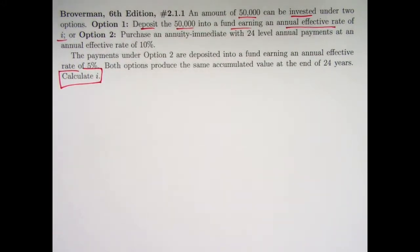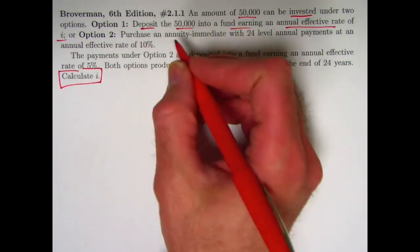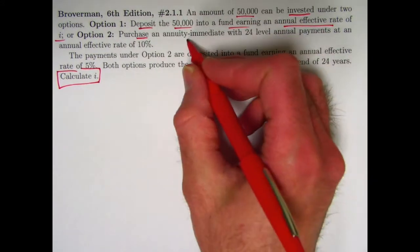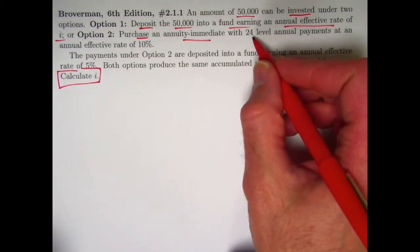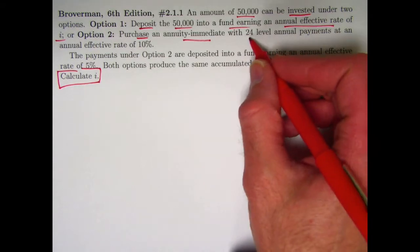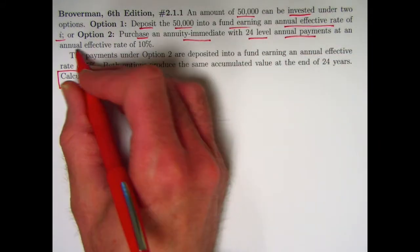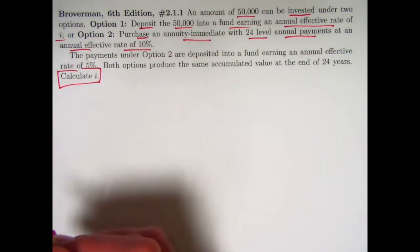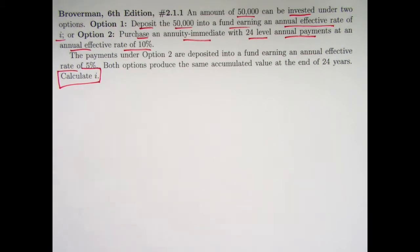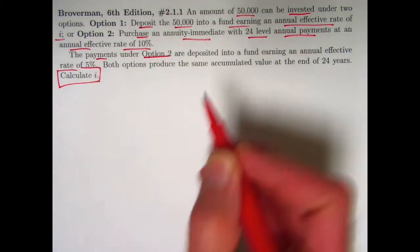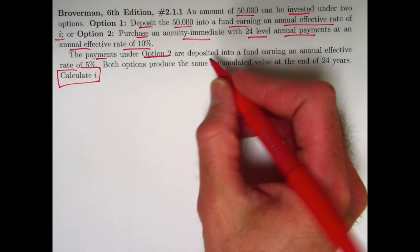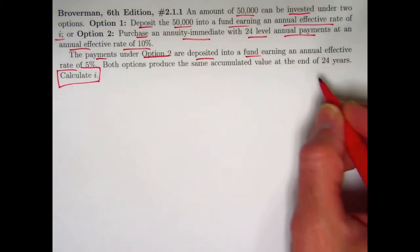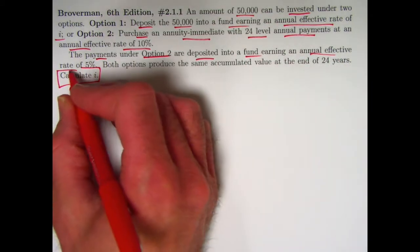And then option two, this is more complicated, we're going to purchase with that $50,000, purchase an annuity immediate, where you're going to get money, 24 level annual payments at an annual effective rate of 10%. And then when you get that money, the payments under option two, you're going to reinvest that money, you're going to deposit it into another fund, earning an annual effective rate of 5%.